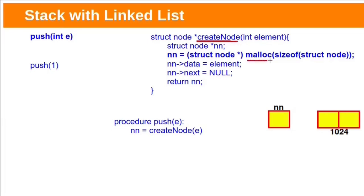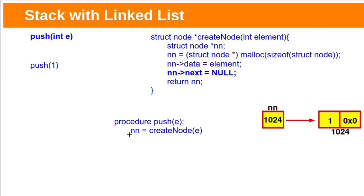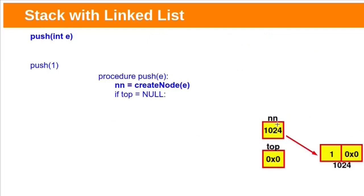The createNode function allocates memory for a linked list node on the heap using malloc. The base address of the allocated memory is stored in the new node pointer — for example, address 1024. If we pass argument 1, the value 1 is stored in the new node's data field. The new node's next field is initially null. This createNode function returns the new node address to the calling function, which is push. The new node pointer in push then points to this newly created node.